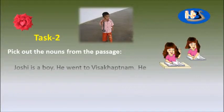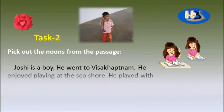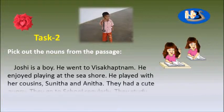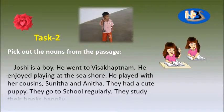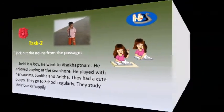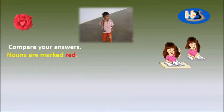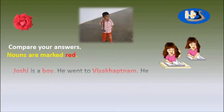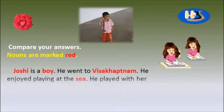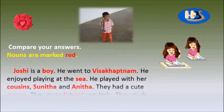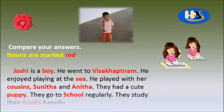Here is another task for you — pick out the nouns from the passage given below and mark them red. The nouns in the passage include: cousins, Sunita, Anita, puppy, school, and books.